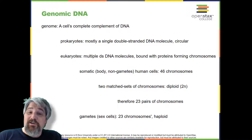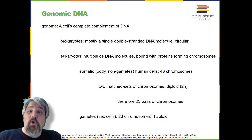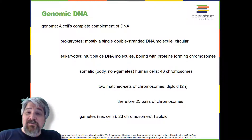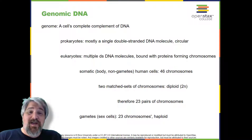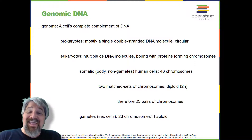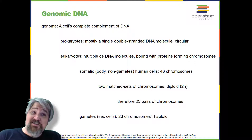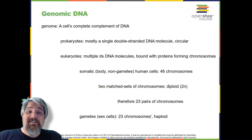Some prokaryotes also have smaller loops of DNA called plasmids that are not essential for normal growth. They mostly have a single, circular chromosome. Some bacteria do have more than one chromosome, and they can be linear. But largely, they tend to have one, and it tends to be circular.